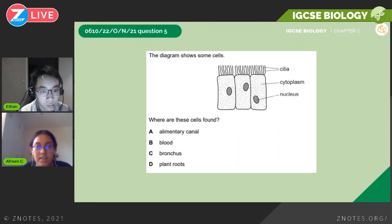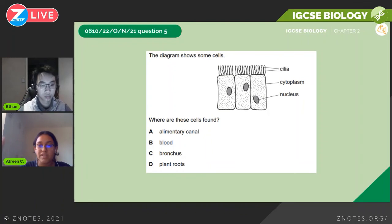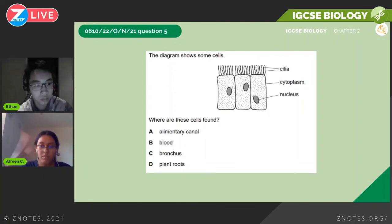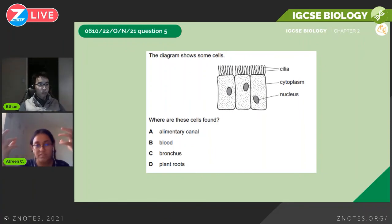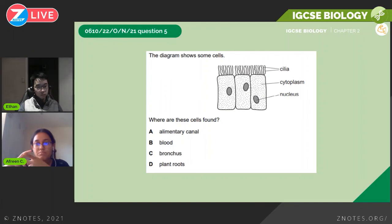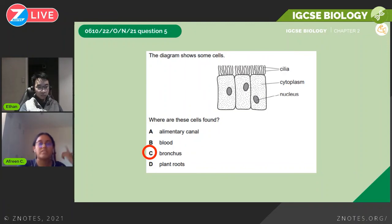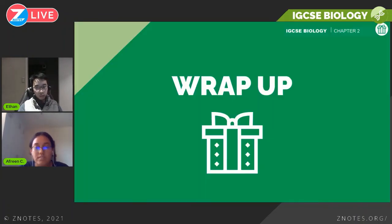October/November 2021: a diagram shows some cells — where are these cells found? These are ciliated cells. Their main function involves mucus — preventing mucus from moving into the lungs. They can't be in the alimentary canal because the cilia is too sensitive to food particles, not in the blood because they'd provide resistance to blood flow, and not in plant roots because those have root hair cells. The evident answer is bronchus.